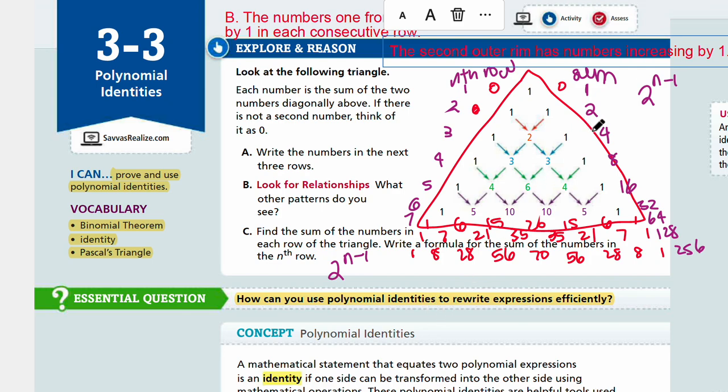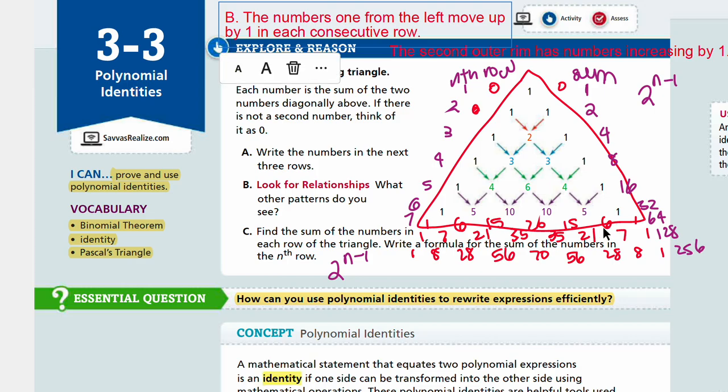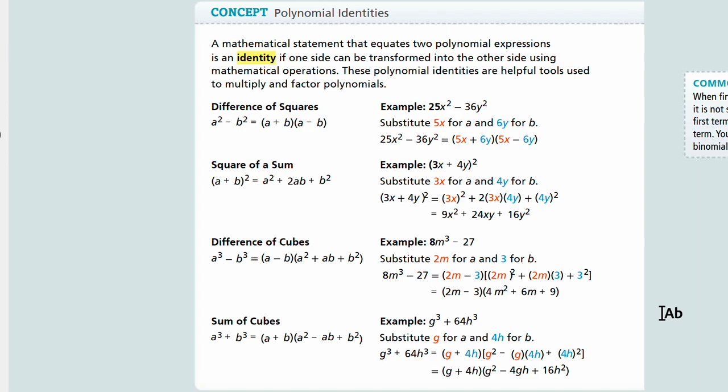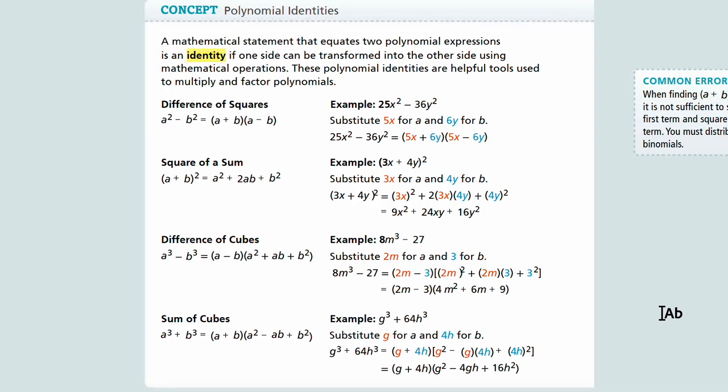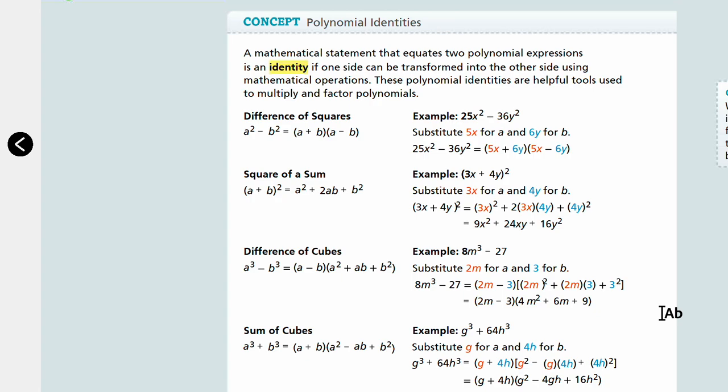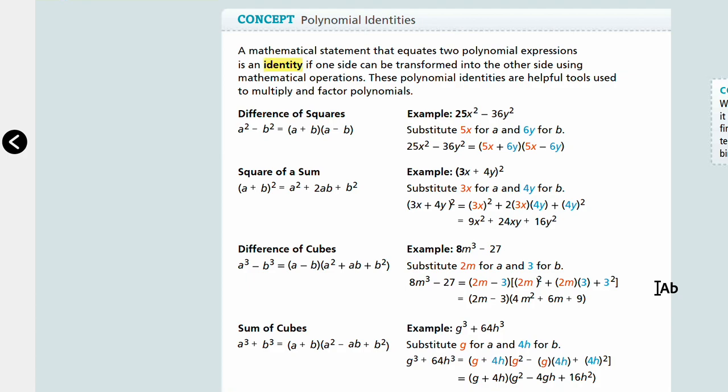So let's think about this big idea. How can you use polynomial identities to rewrite expressions efficiently? Let's look at this concept. Polynomial identities. A mathematical statement that equates two polynomial expressions is an identity if one side can be transformed into the other side using mathematical operations.